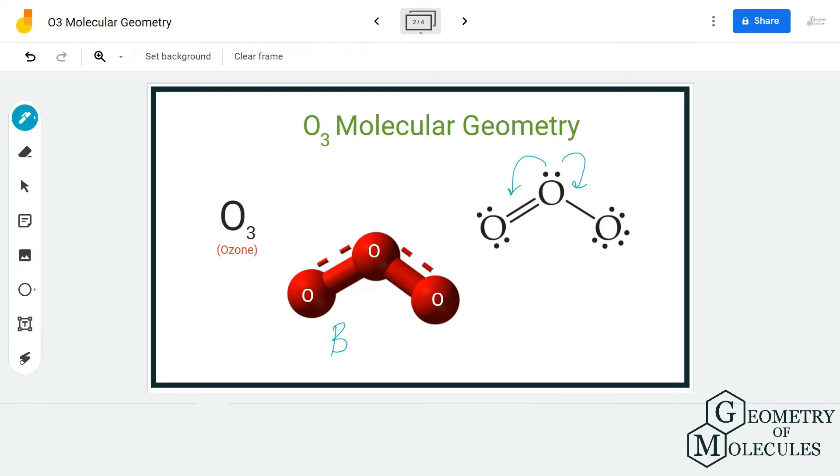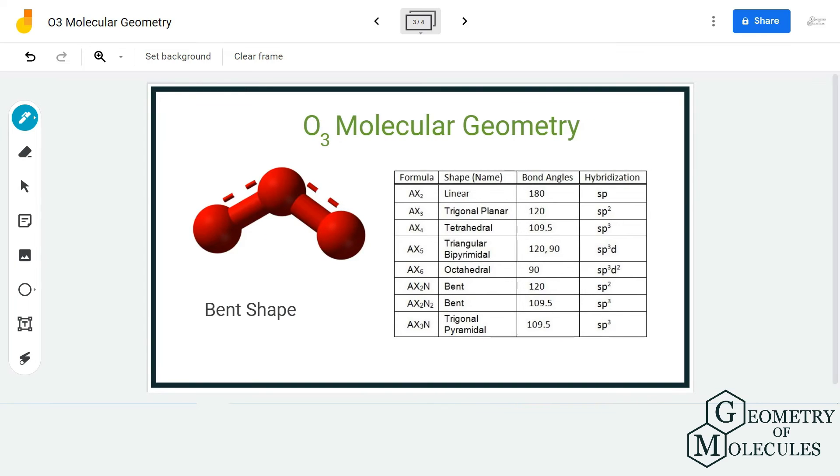You can also confirm this by using AXN notation method. The AXN notation for O3 molecule will be AX2N because there are two atoms forming bonds with the central oxygen atom and there is one lone pair of electrons on the central atom.